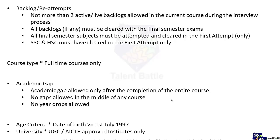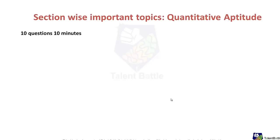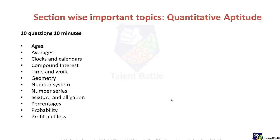Now let's go into detail about topics section wise. For quantitative aptitude, you will face 10 questions in 10 minutes at a medium difficulty level. The important topics are: ages, averages, clocks, calendar, compound interest, time and work, geometry, number system, number series, mixture and allegation, percentage, probability, and profit and loss. These are topics from which questions have been asked over the last two to three years, so prepare all of them to be ready for any question.